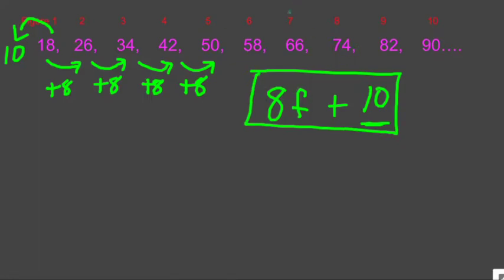8f plus 10 builds this sequence. For example, 8 times 7, 56, plus 10 is 66. 8 times 10, 80, plus 10 is 90.